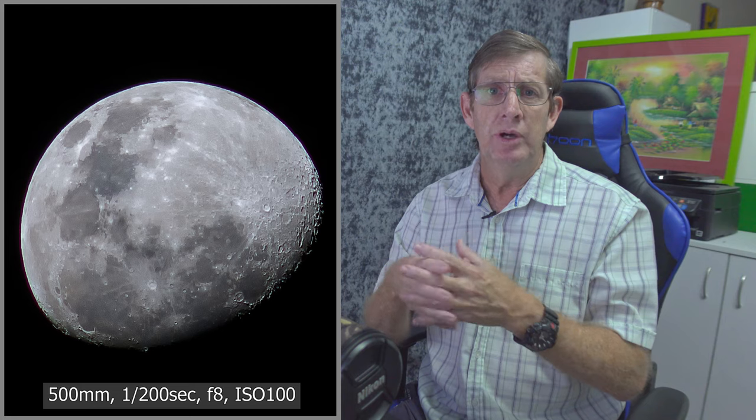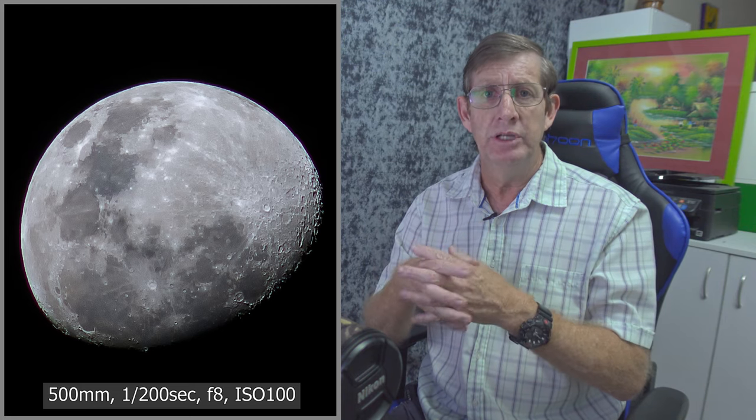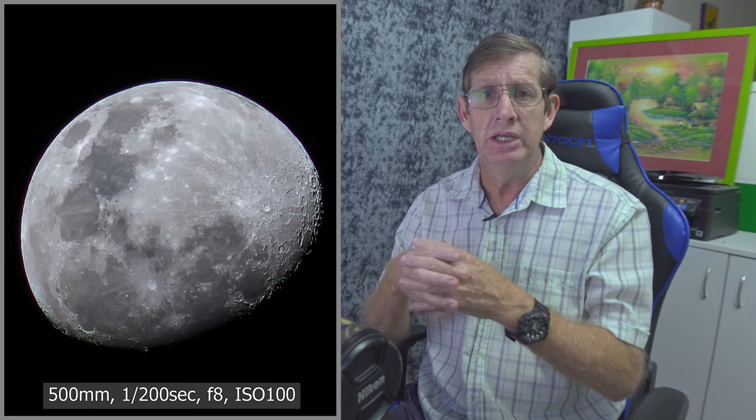Normally when photographing the full moon, my shutter speed is between 1/125s and 1/200s, and ISO is between 100 and 200. I could shoot at 1/200s and get good images — I wouldn't even really need a tripod. But when photographing a lunar eclipse, we cannot shoot at those fast shutter speeds, especially at 500mm, because the moon gets very dark.